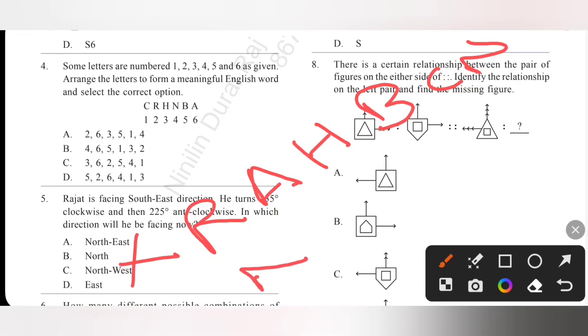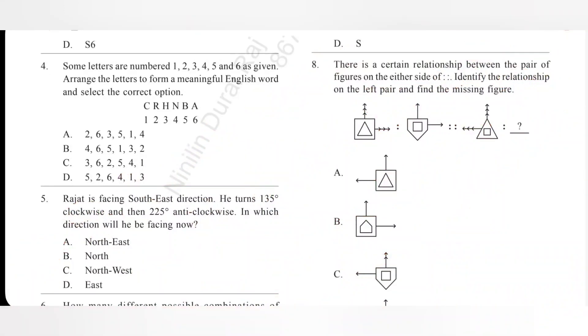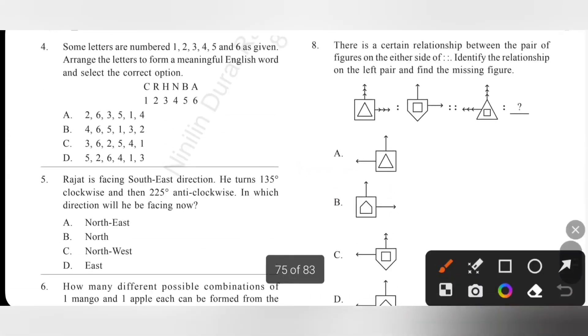Second one 4, 6, 5, 1, 3, 2 that is N, A, B, C, H, R. It is also not a meaningful word. Then C: 3, 6, 2, 5, 4, 1 means H, A, R, B, N, C. It is also not a meaningful word. Last one 5, 2, 6, 4, 1, 3 means B, R, A, N, C, H - branch. It is a meaningful word. Option D is the correct answer.